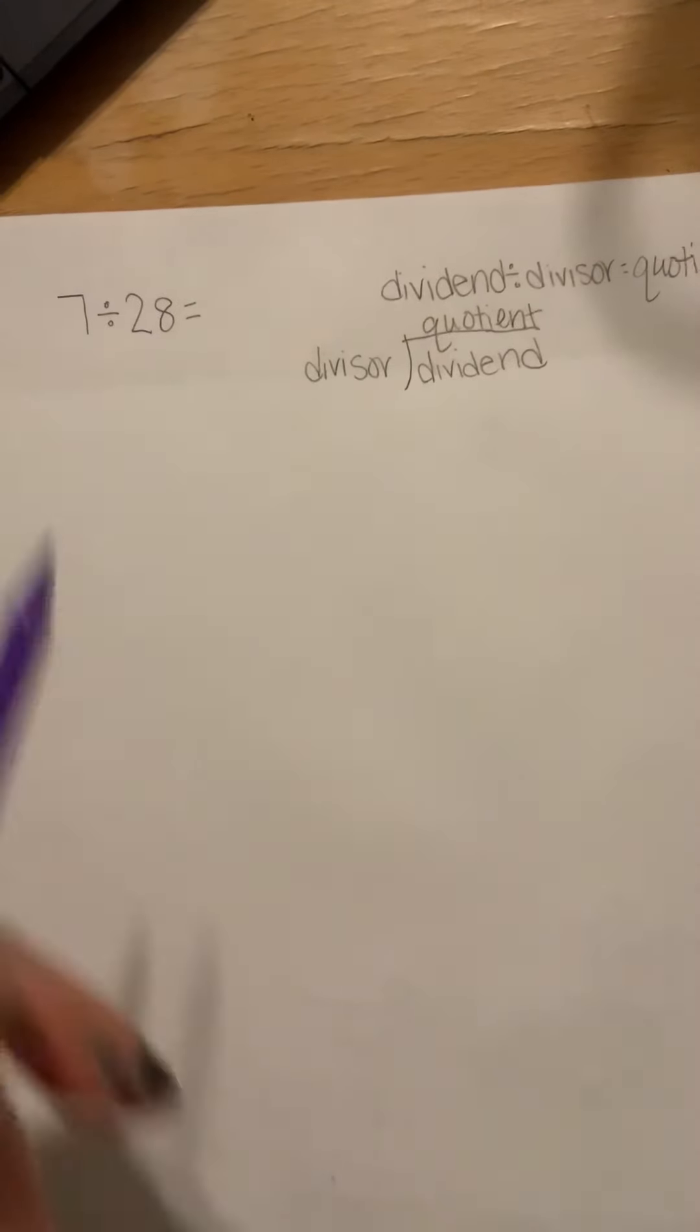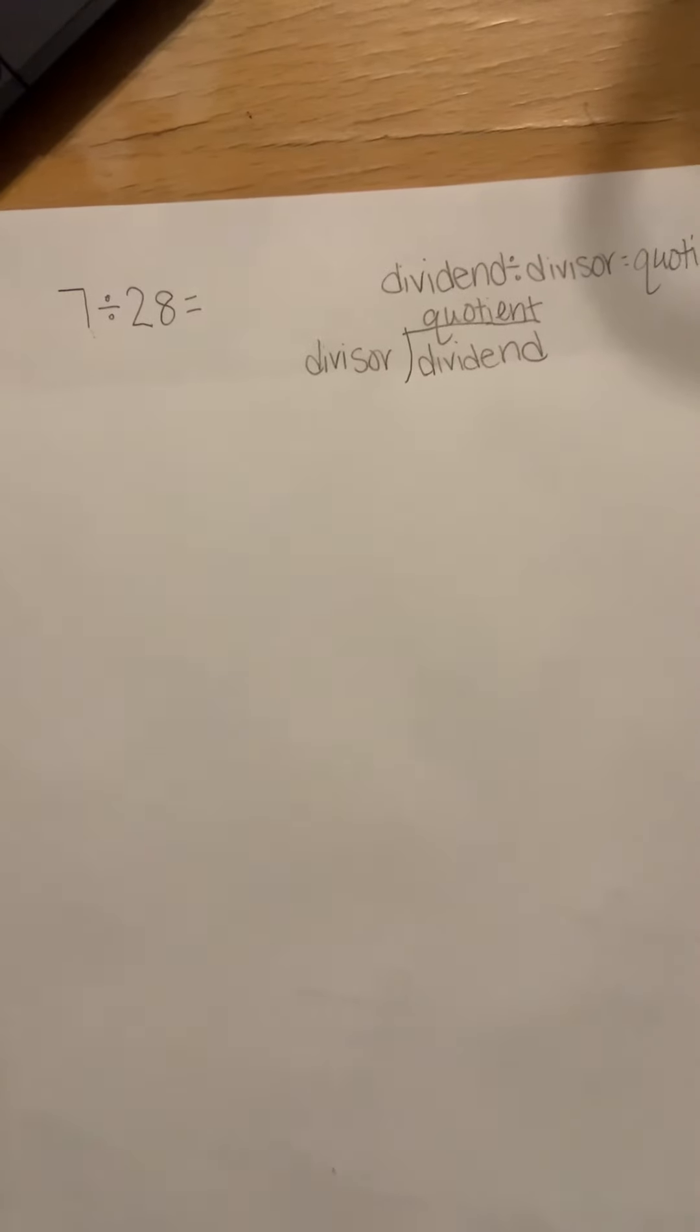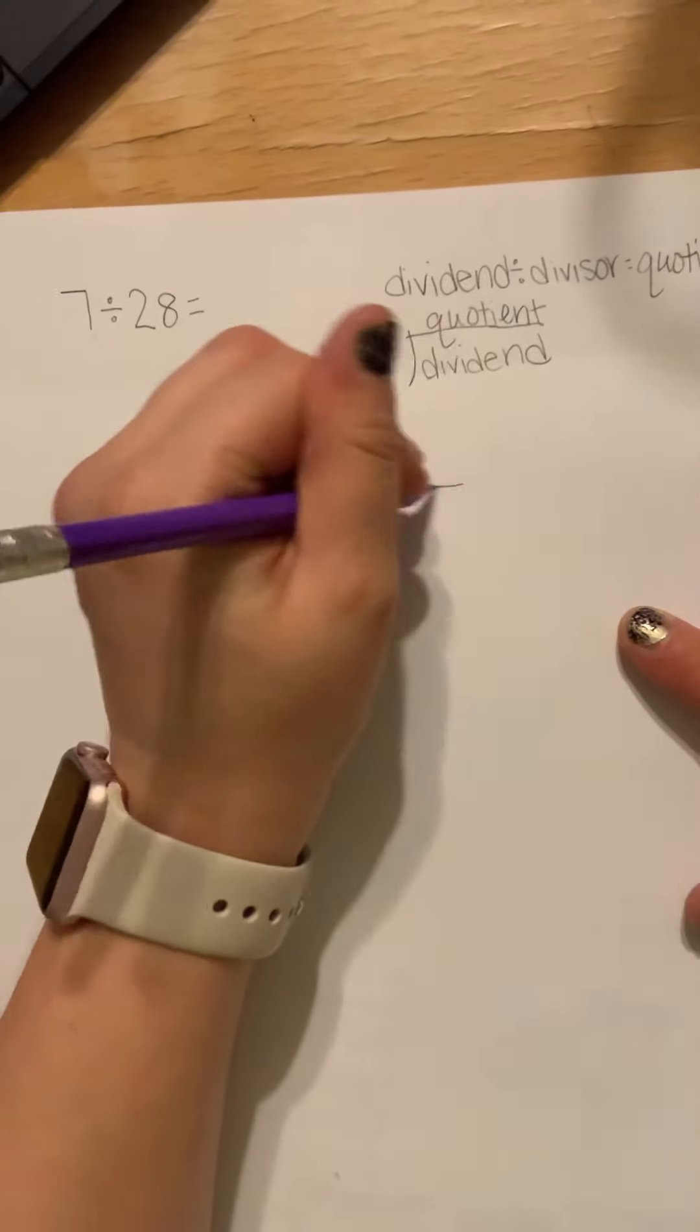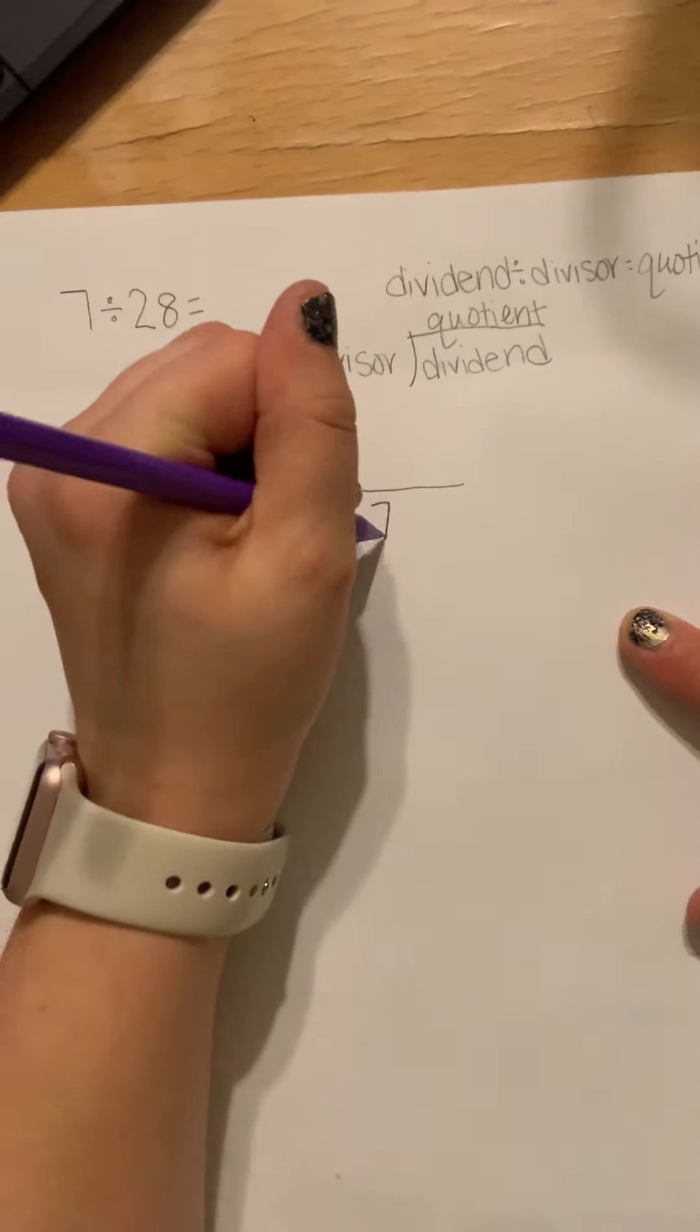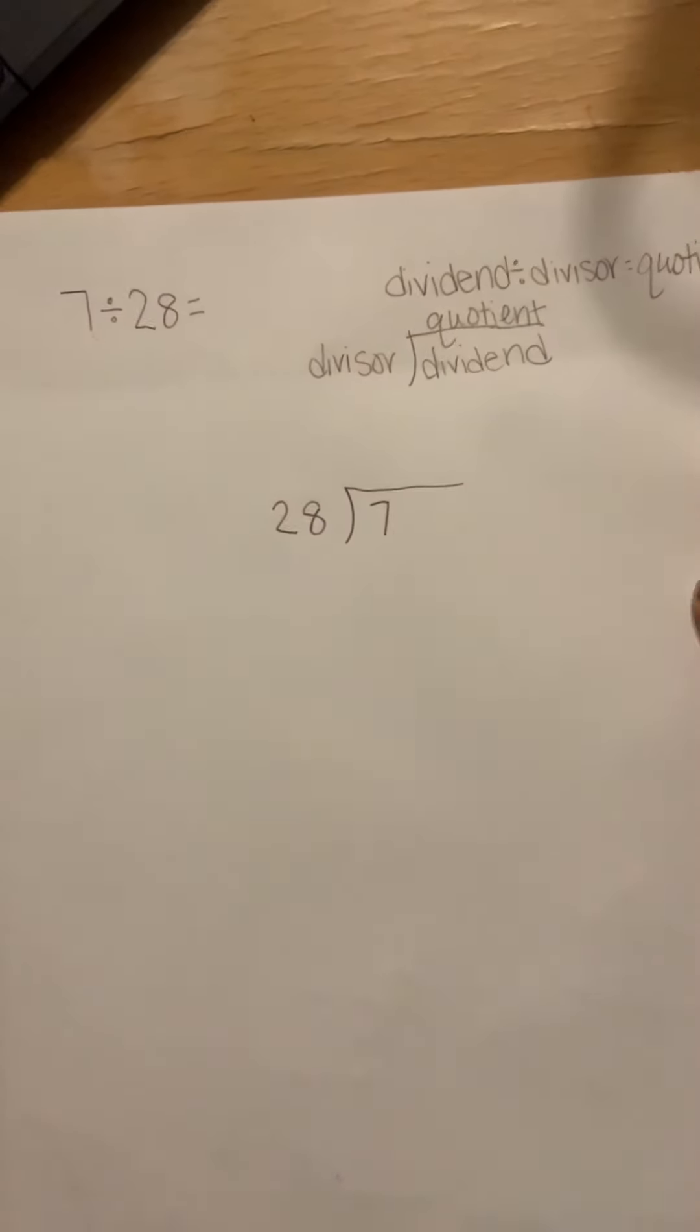So looking at seven divided by 28, I know that seven is the dividend, 28 is the divisor and that seems a little funny for me because seven is smaller than 28 but sometimes you have to take something smaller and break it into many pieces. So to set it up, seven would go right here, 28 will go right outside.